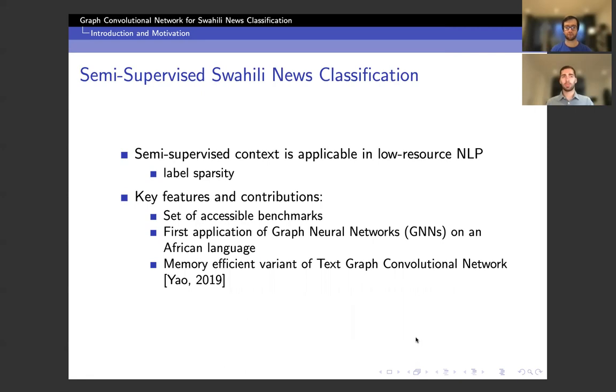The work really points to three key contributions. The first being a set of accessible benchmarks for the semi-supervised Swahili news classification task. We then propose the first application of graph neural networks on an African language. And finally, we present a memory efficient variant of the text graph convolutional neural network model, which was developed on English, which is a high resource language.